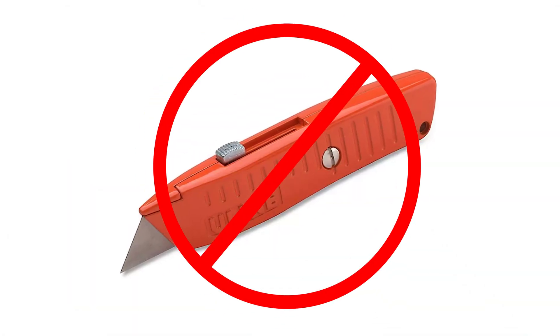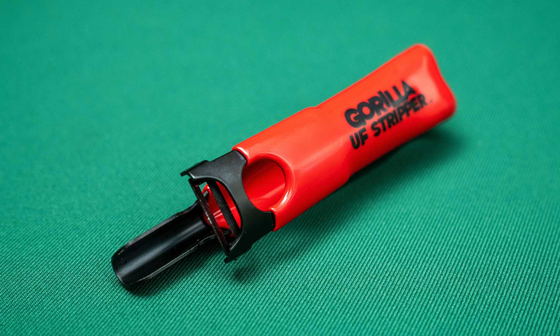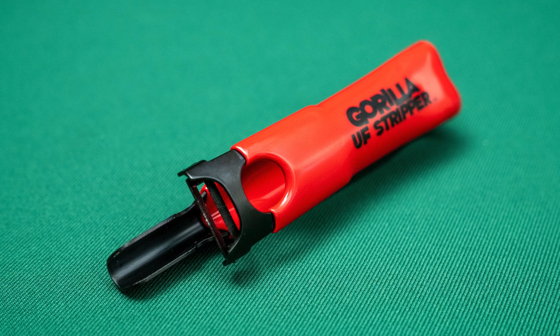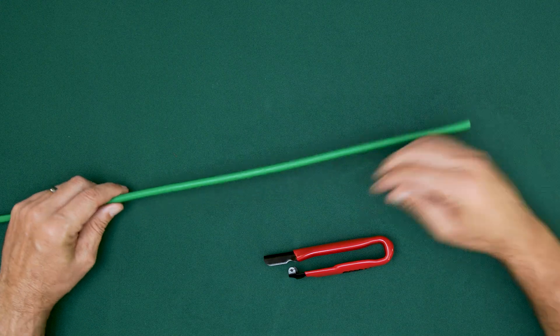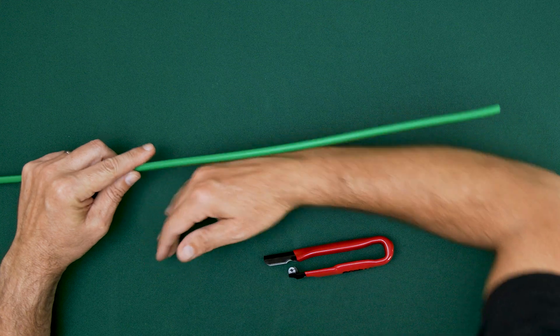Do not use a utility knife. One proven method is to use the Gorilla UF stripper tool. Measure and remove about a forearm's length of jacket.